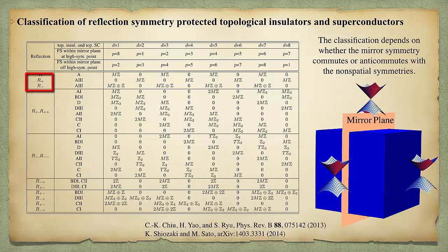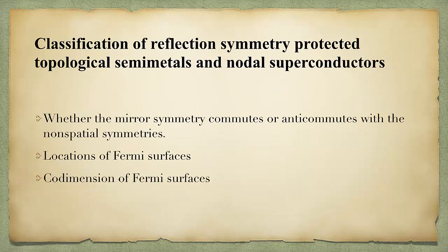Here, the label R+ indicates the mirror symmetry operator commutes with the chiral symmetry operator in class AIII. Similarly, R− indicates the anticommutation relation. When there are more than one non-spatial symmetry, the first subscript of R indicates the commutation or anticommutation relation between the time-reversal operator and the mirror symmetry operator. Similarly, the second subscript of R is for the particle-hole symmetry operator. Now we have the classification of the topological gapped system with non-spatial symmetries and the gapped phases with reflectional symmetry.